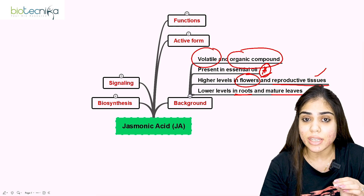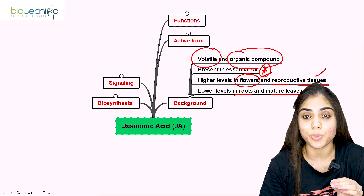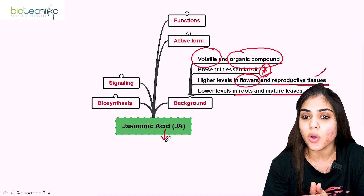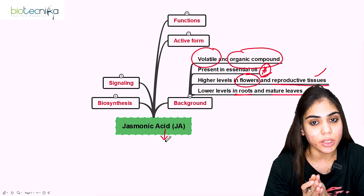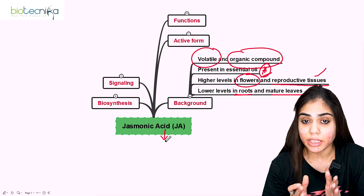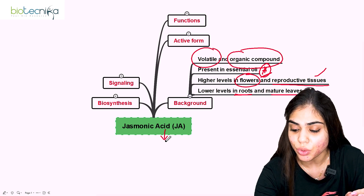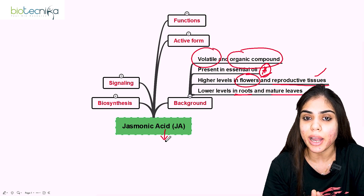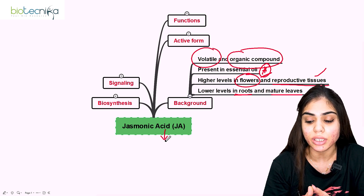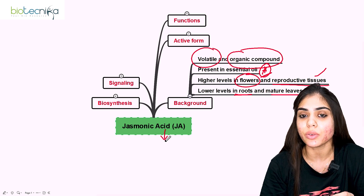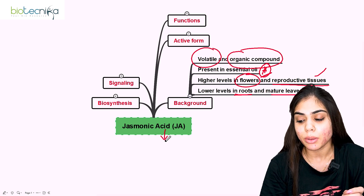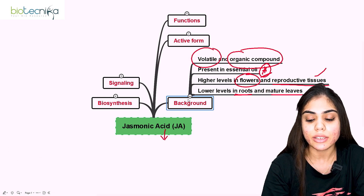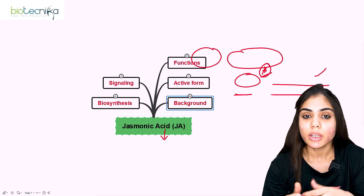To summarize the introduction: jasmonic acid is an organic acidic compound found in jasmine, volatile in nature, present in essential oils. It is found in higher concentration in reproductive tissue and flowers — since flowers bear the reproductive parts involved in fertilization — but lower concentration in roots and mature leaves.